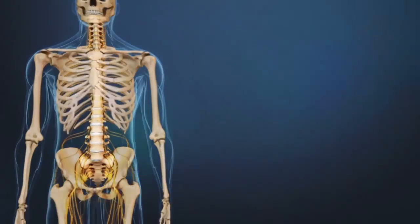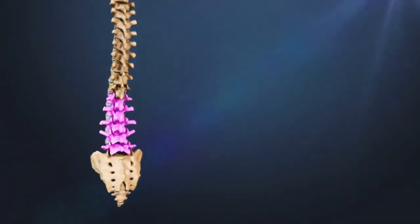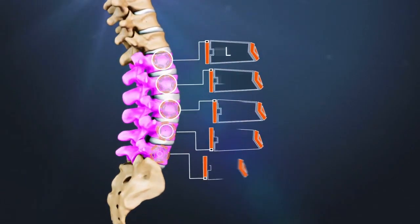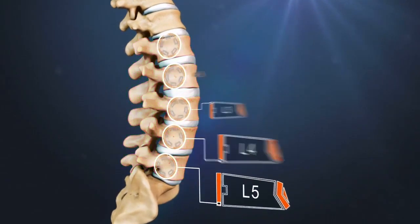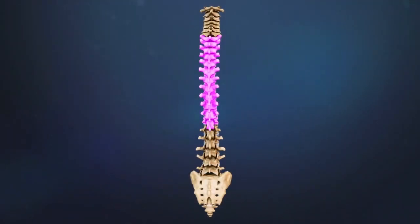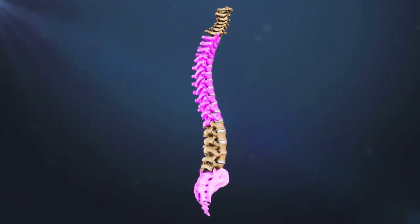The lumbar region of the spine, more commonly known as the lower back, consists of five vertebrae labeled L1 through L5. The lumbar region is situated between the thoracic or chest region of the spine and the sacrum.